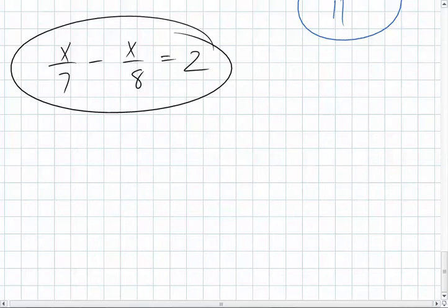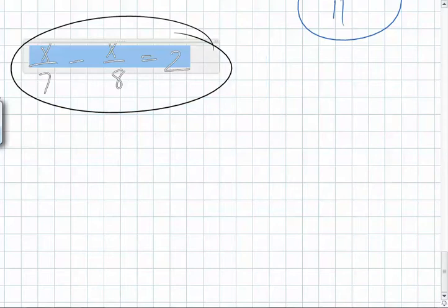Okay, well, I'm going to multiply by seven. So if I multiply by seven, what does this become if I multiply that by seven? Just becomes x minus seven x over eight equals what? I'm multiplying everything by seven. You're going to see in a second. What's seven times two? 14. Thank you.